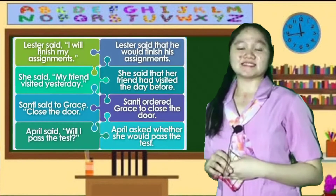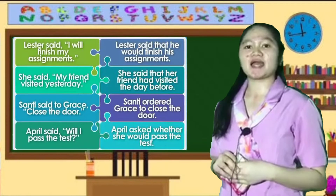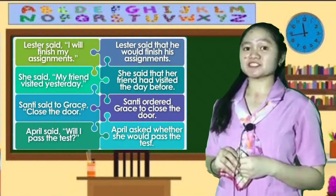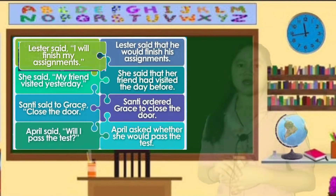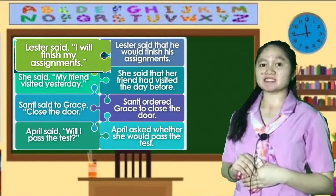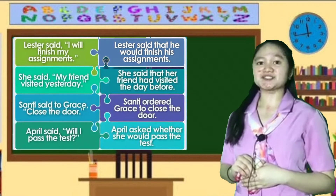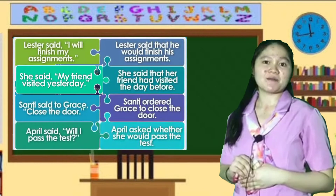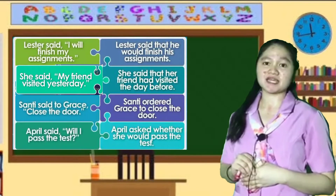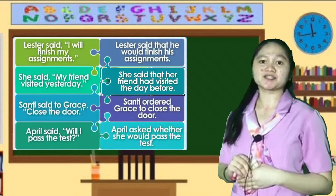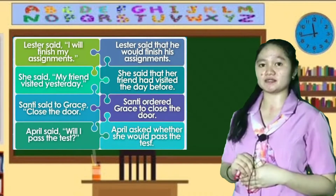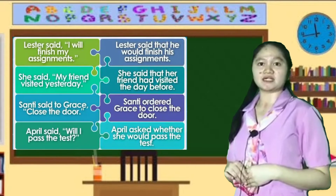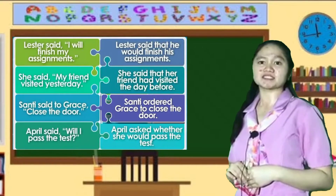I have here a table, and what I want to do is analyze the given group of sentences. Write down your observations on your paper. Lister said, 'I will finish my assignment.' Lister said that he would finish his assignment. She said, 'My friend visited yesterday.' She said that her friend had visited the day before. Santee said to Grace, 'Close the door.' Santee ordered Grace to close the door.